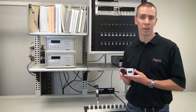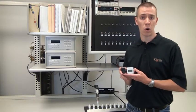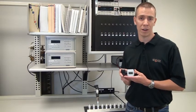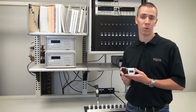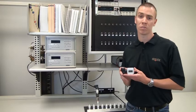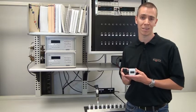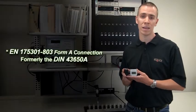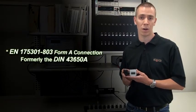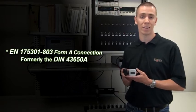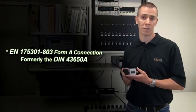This loop-powered digital indicator can be installed on all transmitters with a 4-20 milliamp output and EN175301-803 Form A connection, formerly known as DIN43650A, with sufficient supply voltage as the 1800 series will drop 3 volts DC.